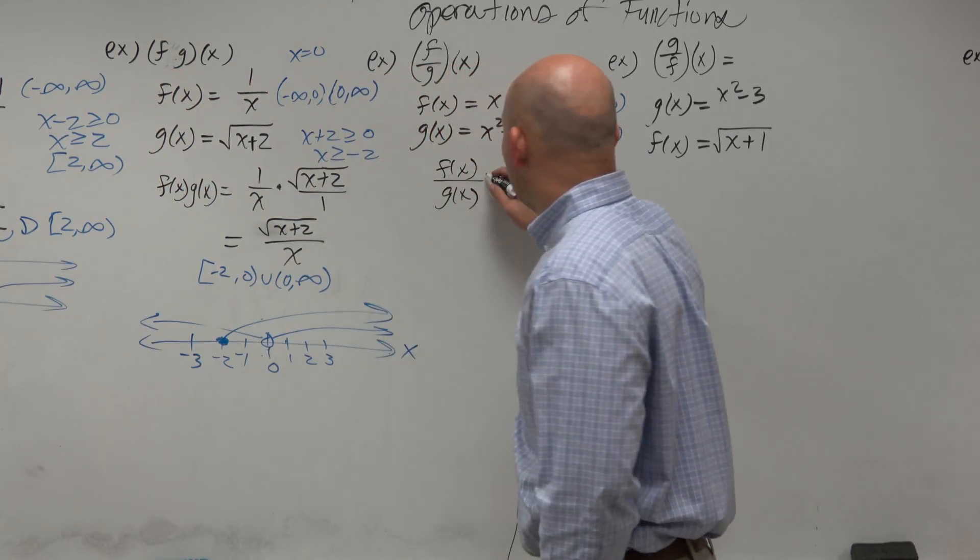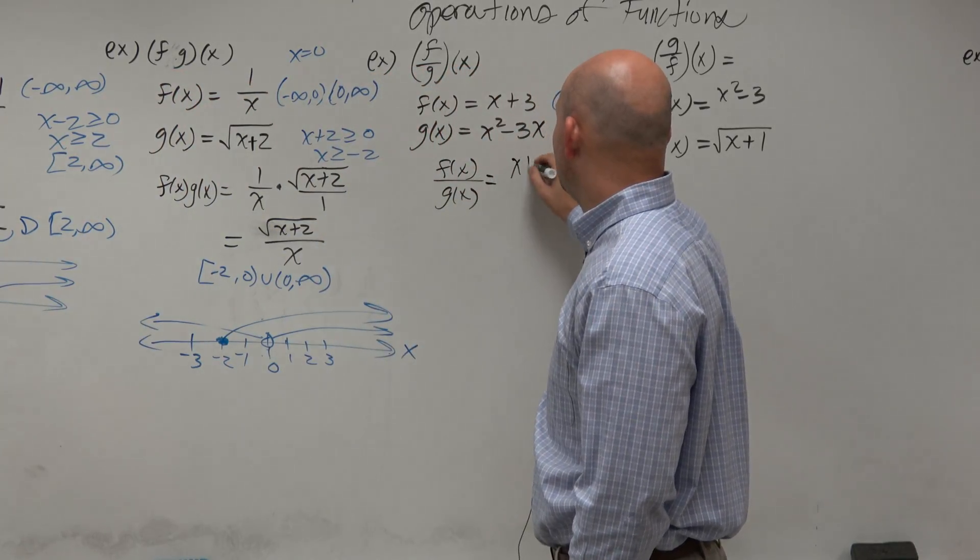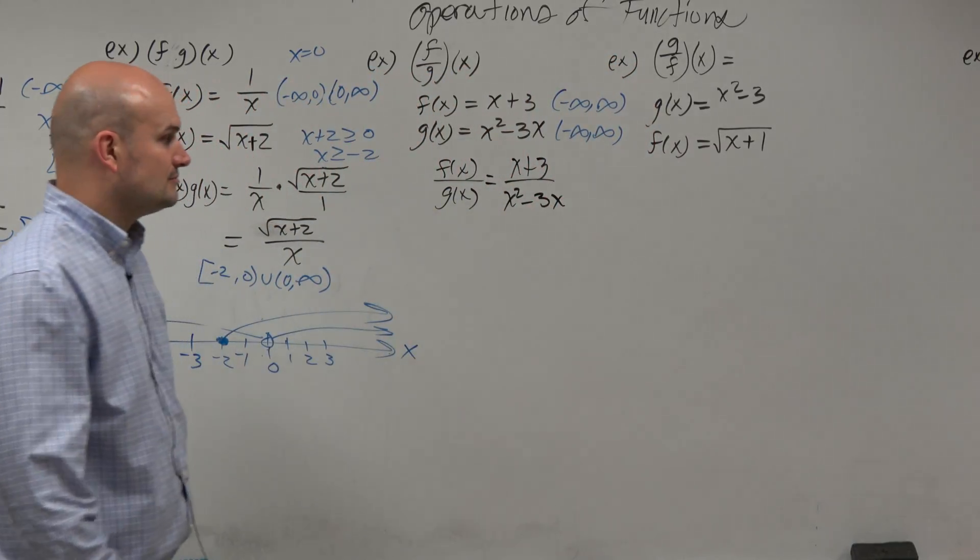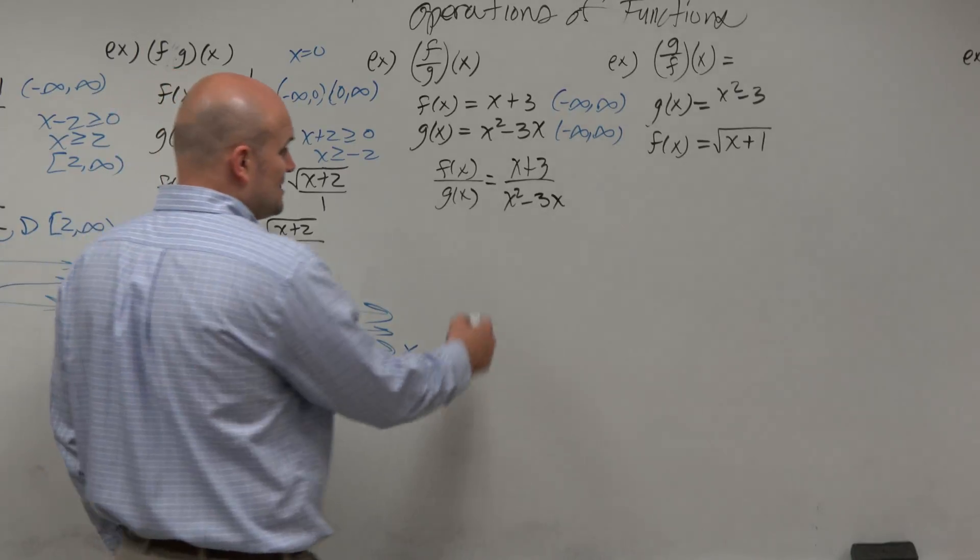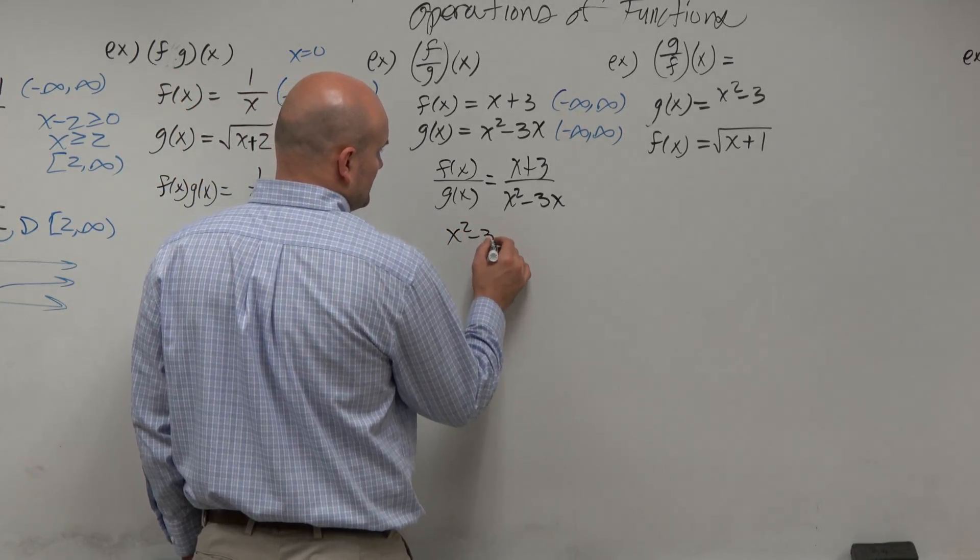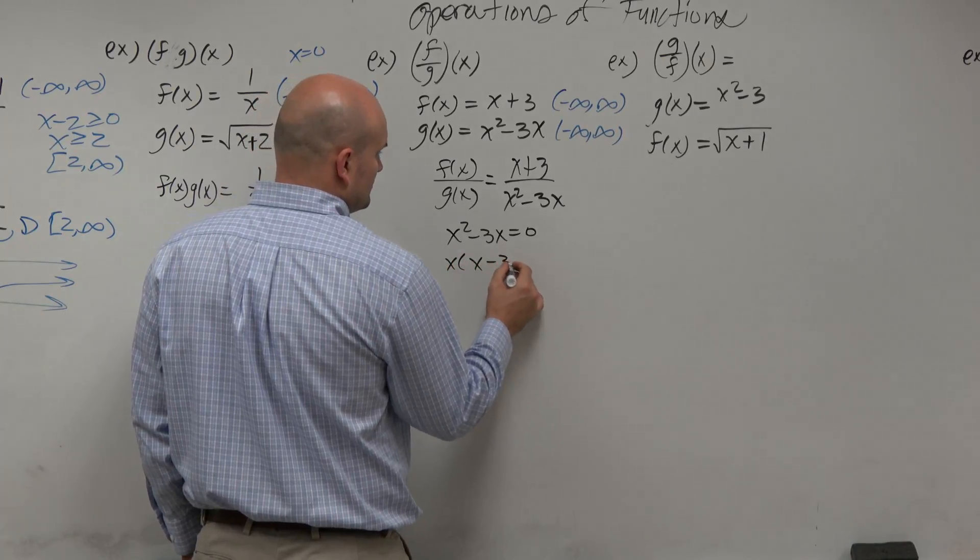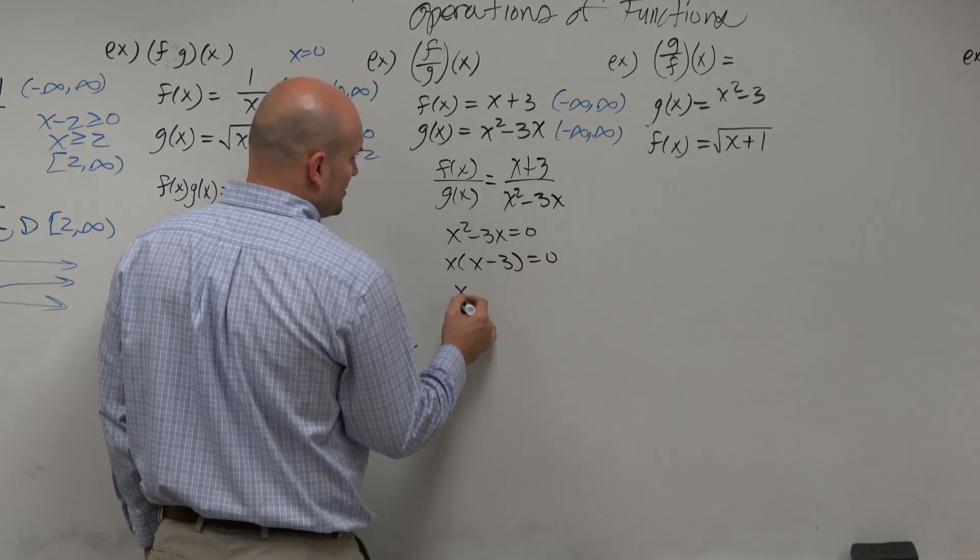So if I do f divided by g(x), I get x plus 3 divided by x squared minus 3x. So now I have to set my denominator equal to 0. Factor. Use the 0 product property.